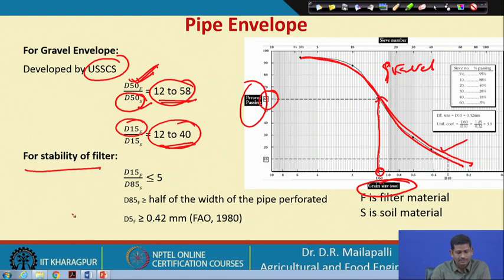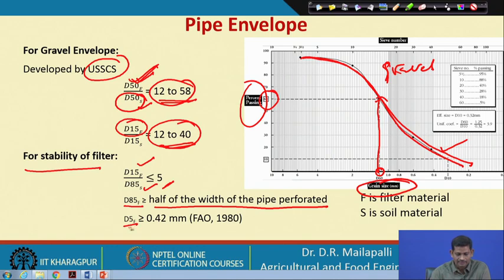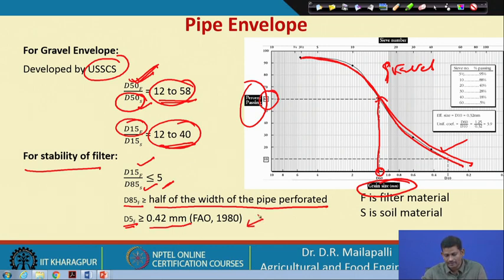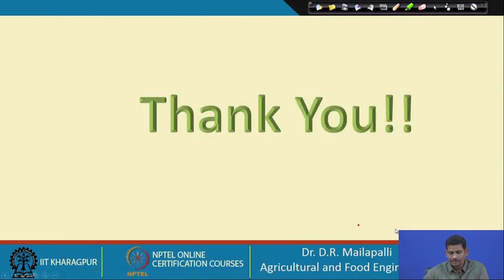For filter stability, D15(filter) / D85(soil) should be less than or equal to 5, and D85(filter) should be greater than or equal to half the width of the pipe perforation, or D5(filter) ≥ 0.42 mm. This is given by FAO 1980, where F denotes filter material and S denotes soil material.